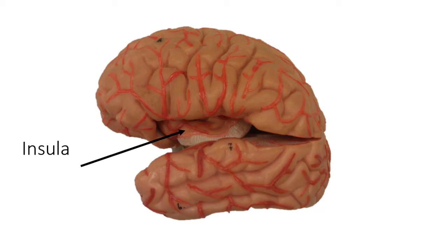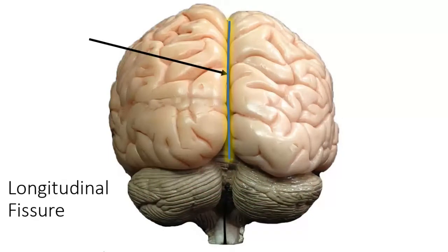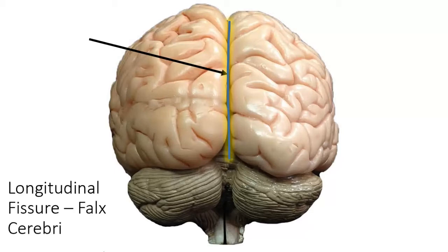Going back to the cerebral hemispheres — you have a right and left cerebral hemisphere. There's a gap in between called the longitudinal fissure. The longitudinal fissure is the space between the right and left cerebral hemisphere. There's actually some connective tissue that sits in between that, and that is referred to as the falx cerebri.